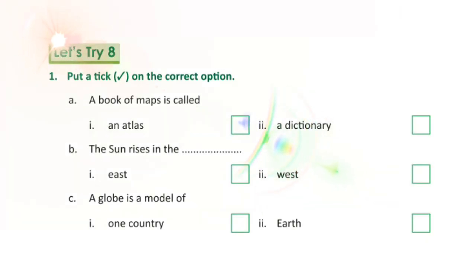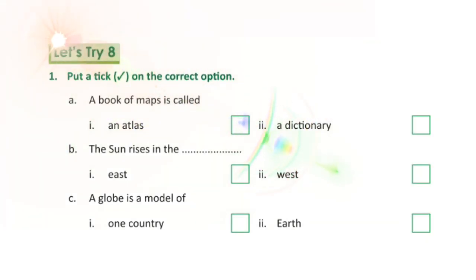Let's try 8. Put a tick on the correct option. A book of maps is called: first, an atlas, or second, a dictionary. The answer is an atlas.